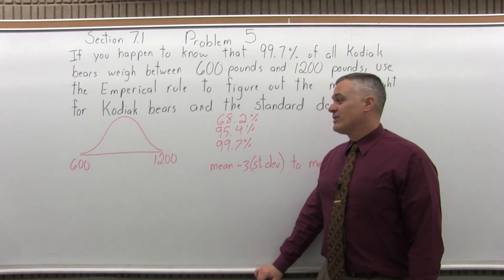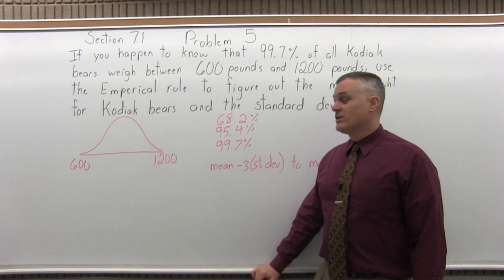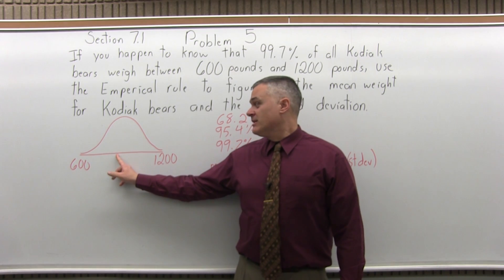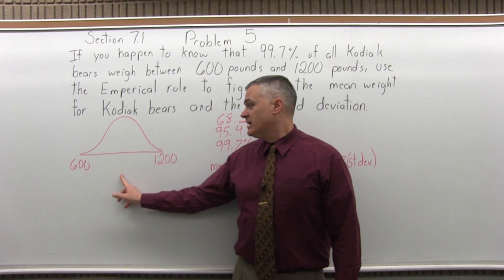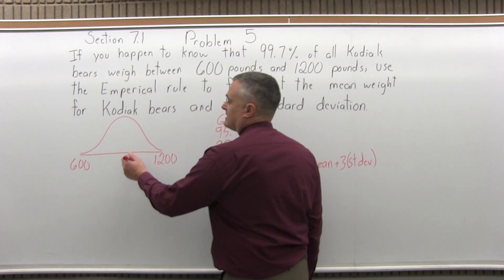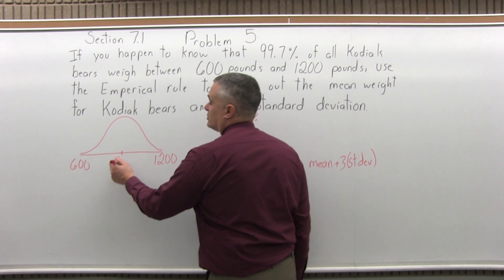Now we have to work it in reverse. The mean, since it is normally distributed, would be right in the middle. So what's right in between 600 and 1200? Well, just by looking at it, I can see the middle value or mean should be 900.